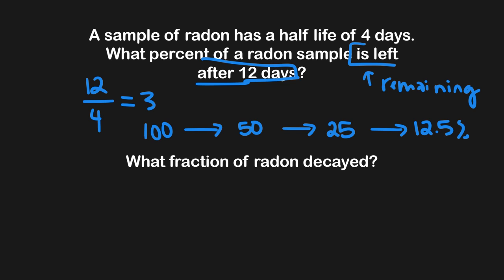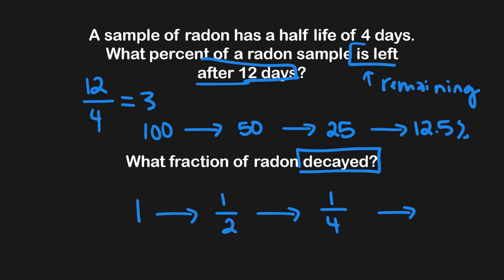Now let's look at the next question: what fraction of radon has decayed? This is a decayed question. We already know we have three half-lives, so we just redraw our arrows. If they ask about fraction, we start with one and keep it as a fraction as we go. At the first half-life it's one-half, half of a half is one-fourth, and half of one-fourth is one-eighth. Essentially, you multiply the denominator by two at each step: one over one, then two, then four, then eight.